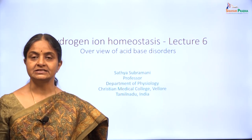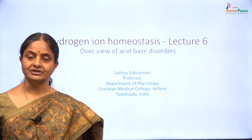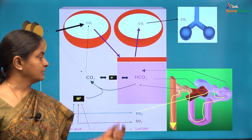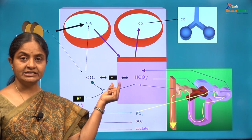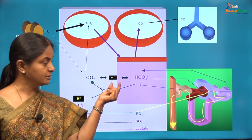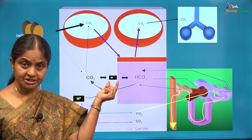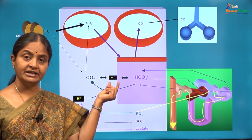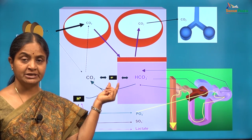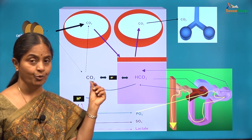Lecture 6 in this series is a short overview of disturbances of plasma pH. Plasma pH is the negative logarithm of its free hydrogen ion concentration. This proton concentration is at 40 nano equivalents per liter, and that is what keeps the plasma or extracellular fluid pH at 7.4.